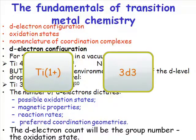It could be titanium 2+, in which case it will be 3d2. Or it could be titanium 3+, in which case it will be 3d1. Or titanium 4+, in which case it will be 3d0.